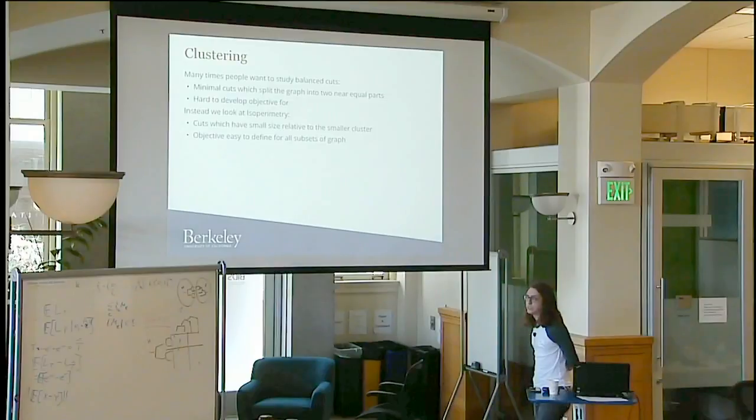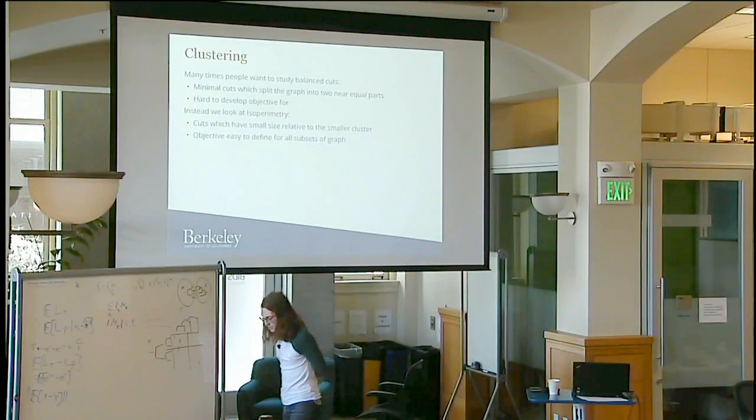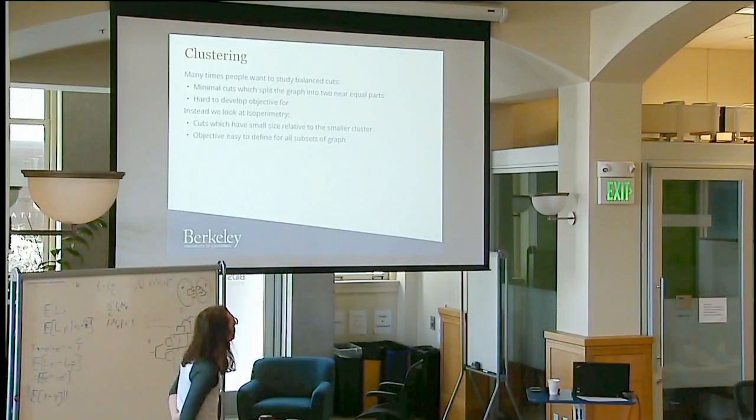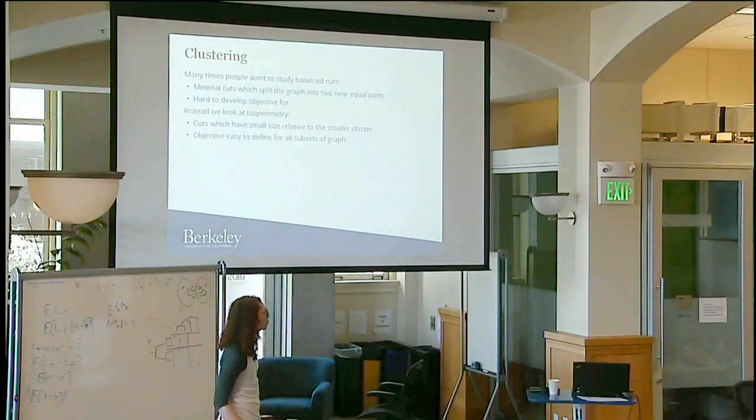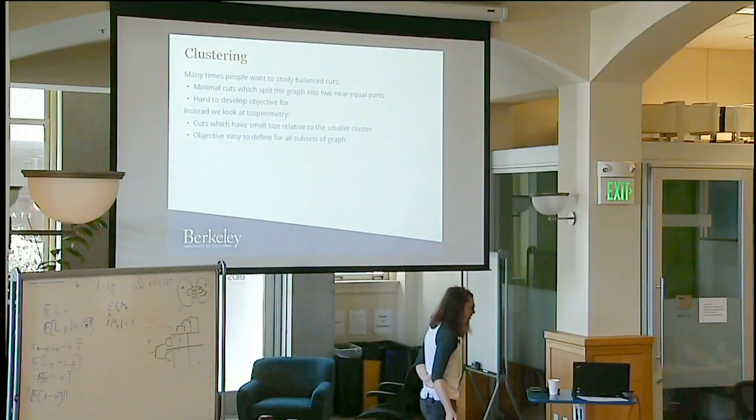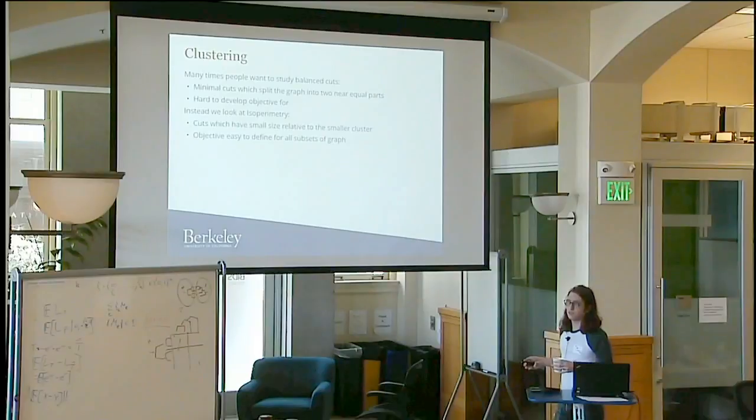I'm going to start with the problem of clustering. There are many times where people are interested in finding balanced cuts, a cut that has as few edges as possible in a graph but splits the graph into two pieces which are nearly equal parts. Maybe each piece has size one-third to two-thirds of the vertices. This is not so easy to develop an objective for. An easier thing to develop an objective for is looking at the ratio of the number of edges we cut over the size of the smallest subset.